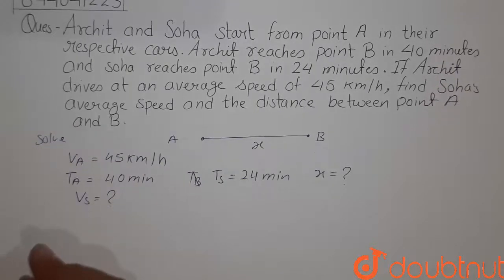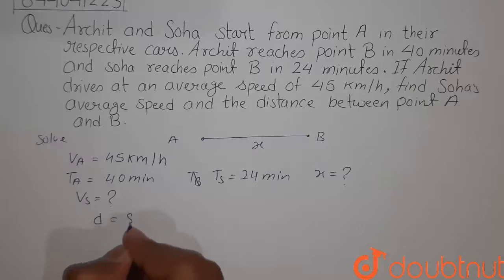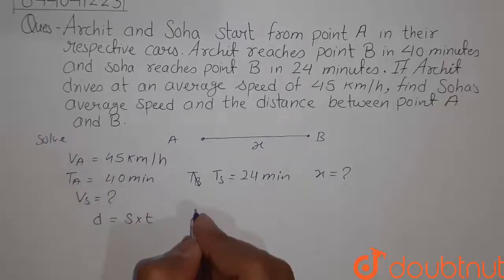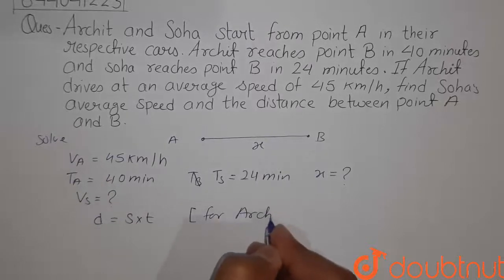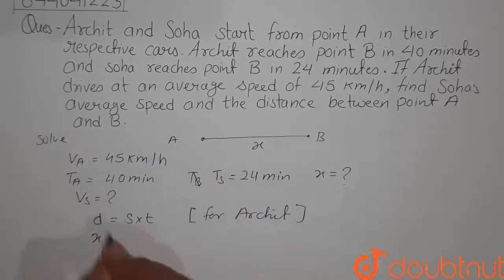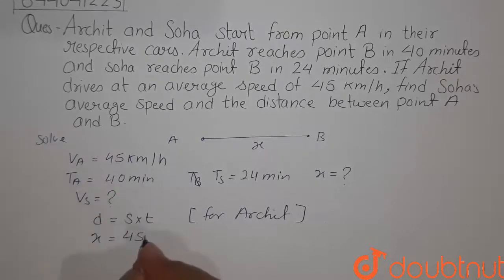As we know, distance equals speed into time. For Archit, the distance is X, speed is 45 km per hour, and time is 40 minutes. Since it is in minutes, we divide by 60 to convert it to hours.